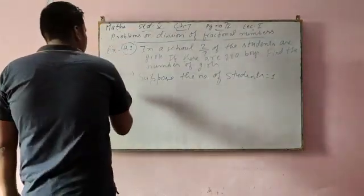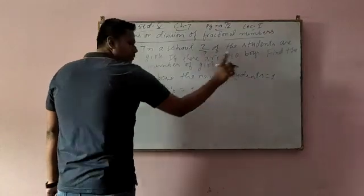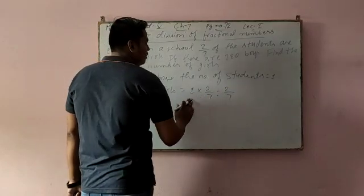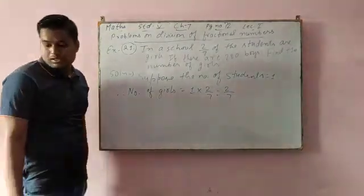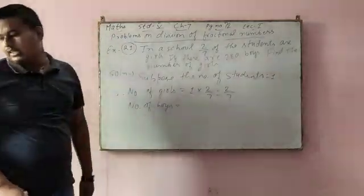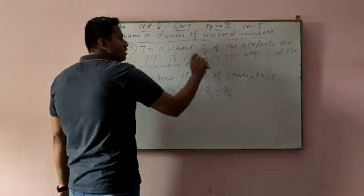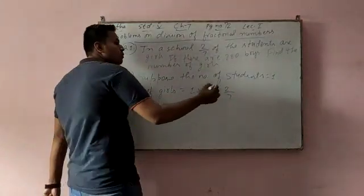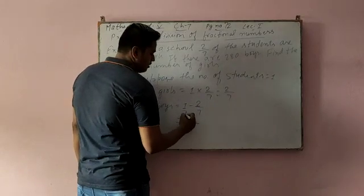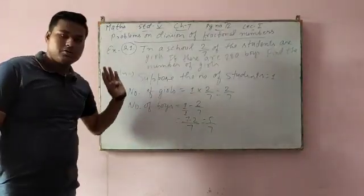Now, therefore, number of girls will be what? Number of students is 1, and number of girls will be 1 into 2 by 7. It means 2 into 1 is 2, 1 into 7 is 7. So number of girls will be 2 by 7. Now, number of boys 280 is given. Number of girls in fraction is 2 by 7. But you do not know the number of boys in fraction. So number of students is 1, so subtract 1 minus 2 by 7. 7 minus 2 is 5. So number of boys in fraction is 5 by 7.